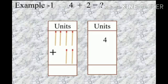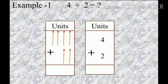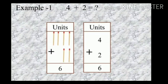Children, let's solve the first example: 4 plus 2 is equal to how much? Here we have 4 units plus 2 units. 4 units means 4 single matchsticks, so we write 4 in the units place. Then 2 single matchsticks, so we write 2 in the units place below 4. Now we add 4 plus 2 — counting: 5, 6. On adding them, we get 6 units, so we write 6 in the units place.